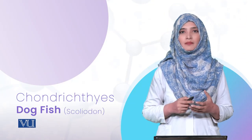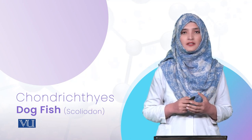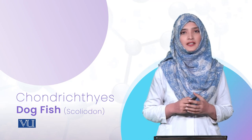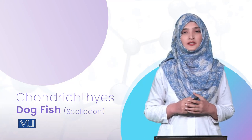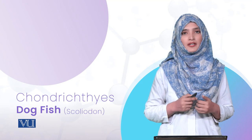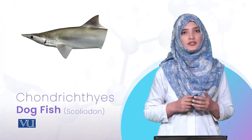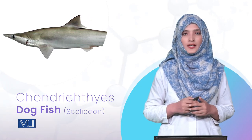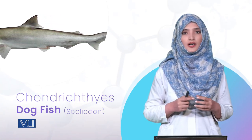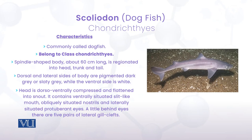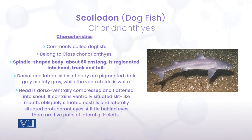اب Chondrichthyes fishes کو دیکھتے ہیں جن میں cartilaginous skeleton exist کرتا ہے۔ اس کا representative member Dogfish ہے جس کا genus Scoliodon ہے۔ Dogfish کی external body morphology: body spindle-shaped، almost 60 cm length ہے۔ Body کے تین parts: head, trunk اور tail۔ Dorsal اور lateral sides dark gray یا slaty gray color میں pigmented ہیں جبکہ ventral side white color کی ہوتی ہے۔